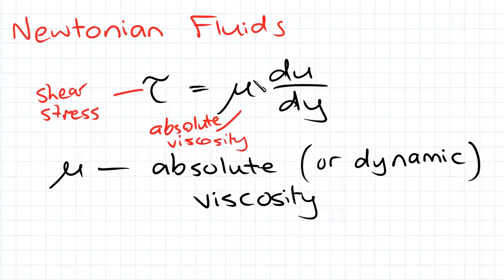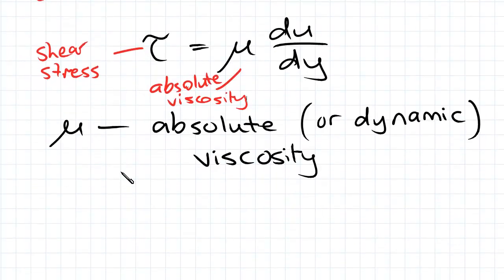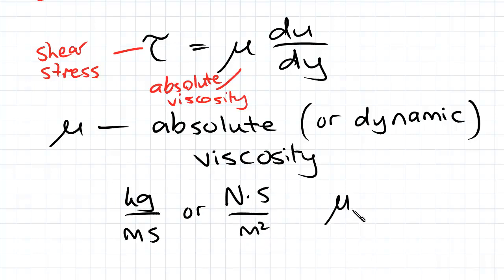So absolute viscosity is this symbol here and that is also called dynamic viscosity and the units are kilograms per meter second or Newton second per meter squared. And an easy way to remember that is through the MLT system, it's just M on LT. So kilograms on meters second.